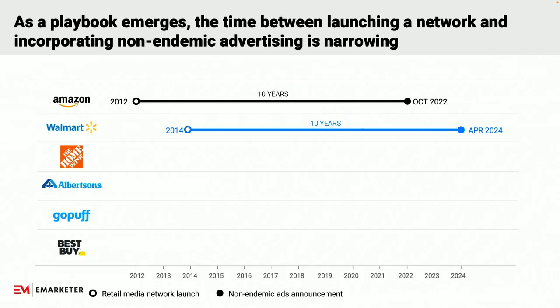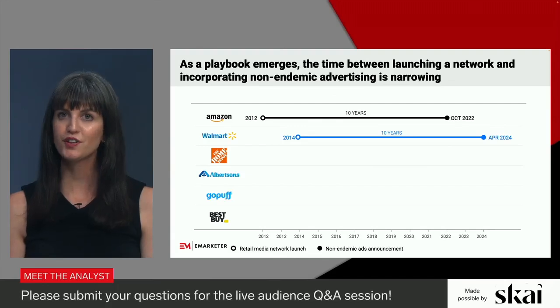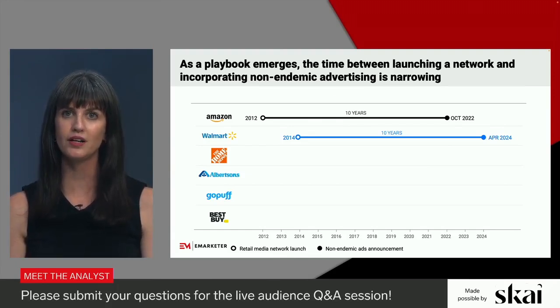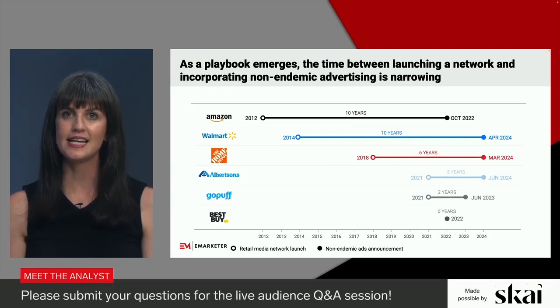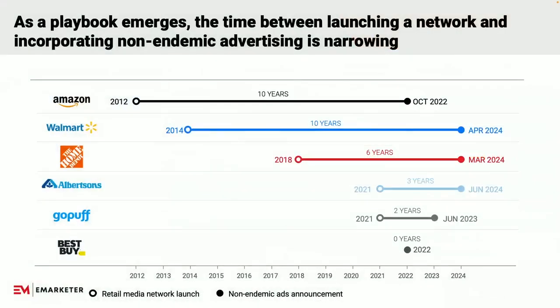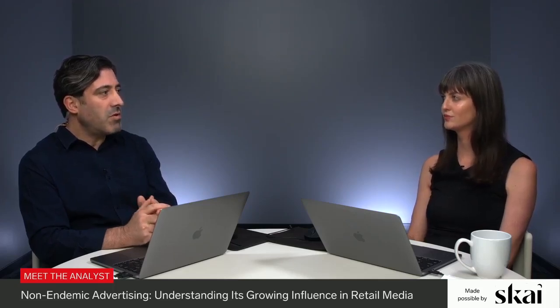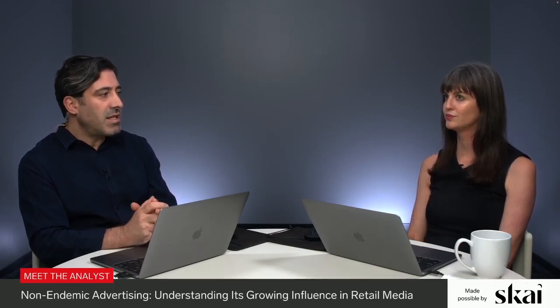Walmart made several announcements in 2024: first in April, making select non-endemic advertisers eligible to purchase display advertising through their retail media network, and more recently exploring bringing non-endemic advertisers into physical stores. Since then, one trend became clear — less time is passing between retailers launching their media networks and exploring non-endemic. Jeremy asked whether newer entrants are just playing catch-up given the chasm between Amazon and smaller players like GoPuff.